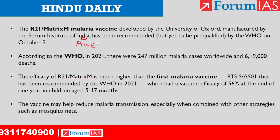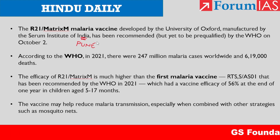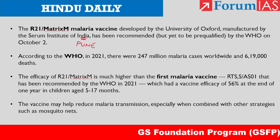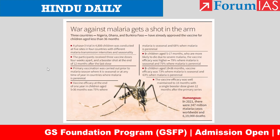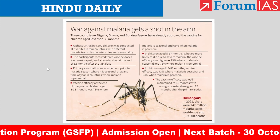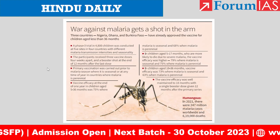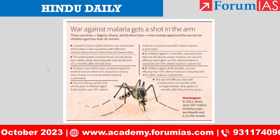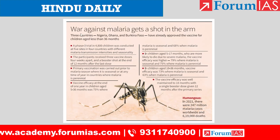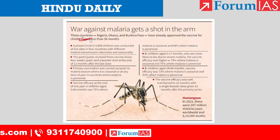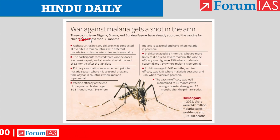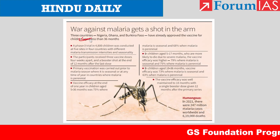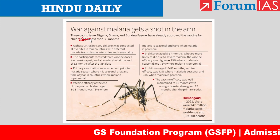R21 Matrix M was tested in a phase 3 trial at 5 sites across 4 countries — Mali, Burkina Faso, Kenya, and Tanzania — all in Africa. This vaccine is yet to be pre-qualified by the WHO. On October 2nd, three countries — Nigeria, Ghana, and Burkina Faso — already approved the use of this vaccine to immunize children aged less than 36 months.